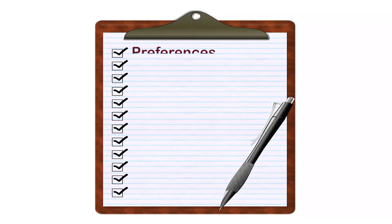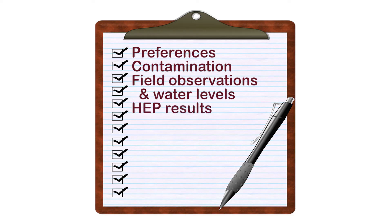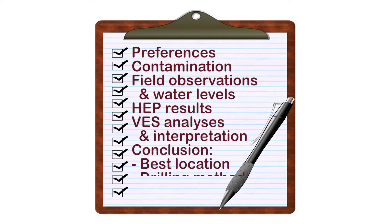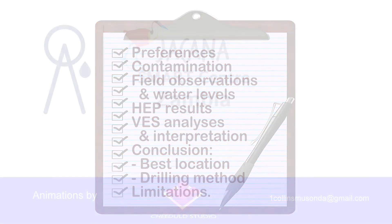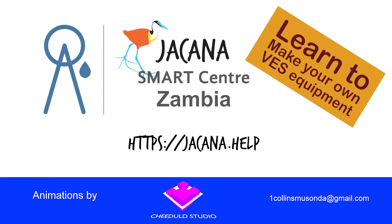The report for your customer must include customer preferences, possible sources of contamination, field observations including water levels, HEP results and what you learn from them, VES graph with analysis and your interpretation, conclusion, and suggested best suitable drilling method and best location. Also explain the physical limitations of the used method. Our smart center in Zambia provides practical training, for example in borehole siting and even making your own VES equipment. Visit our website and have a chat.